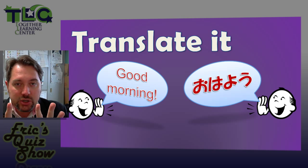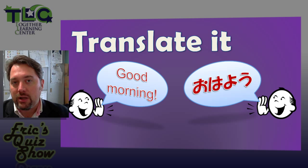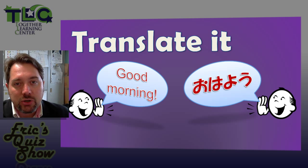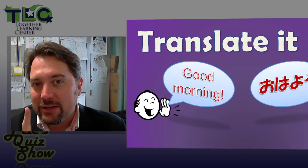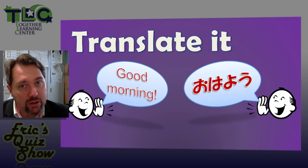You will see Japanese or English on the screen. If you see English, change it to Japanese. If you see Japanese, change it to English. And when you think you can translate it, simply hit your buzzer and say the Japanese or English.